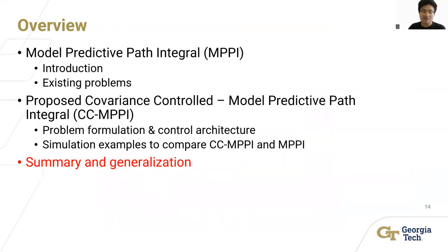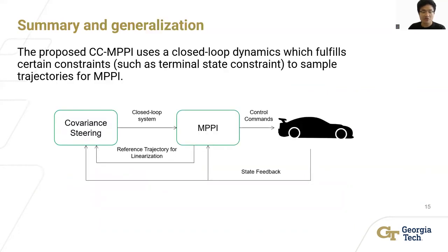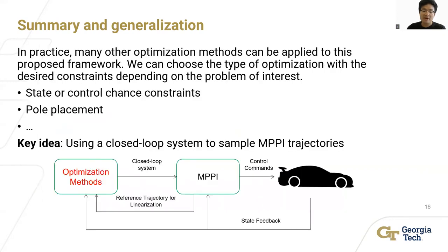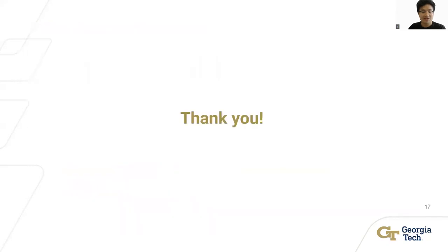Let's now summarize and generalize the proposed CCMPPI controller architecture. The proposed controller uses a closed-loop system which fulfills certain constraints, such as terminal state constraints, to sample trajectories for MPPI. In practice, many other optimization methods can be applied to this proposed framework. We can choose the type of optimization with the desired constraints, depending on the problem of interest, to create a closed-loop system. For example, we can add the state or control chance constraints to covariance theory, or we can just use a simple pole placement method. The key idea is to use a closed-loop system to sample MPPI trajectories. This concludes my presentation. Thank you.